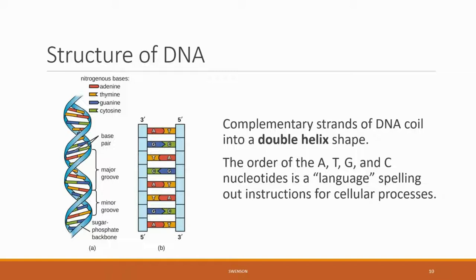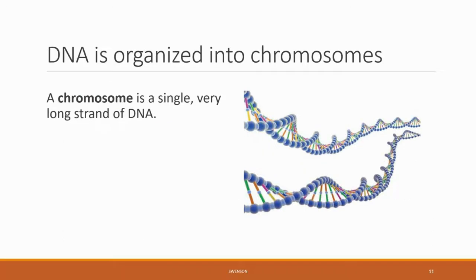Imagine this like a twisted staircase, with the nitrogenous bases hydrogen bonded to each other representing the steps of the staircase, and the sugar-phosphate backbone representing the banisters. The language or code of DNA is written in the sequence of the A's, T's, G's, and C's of the DNA.